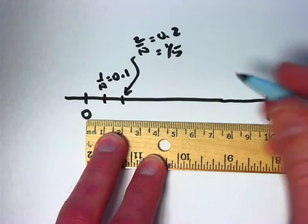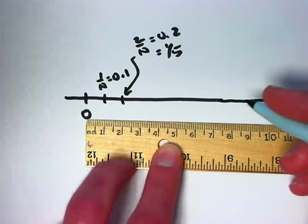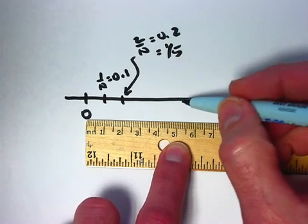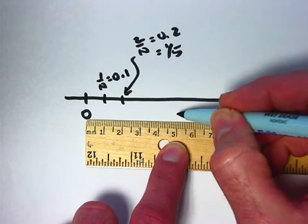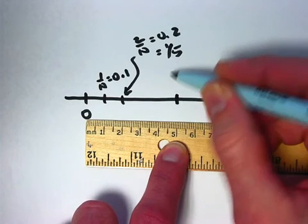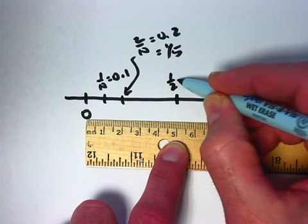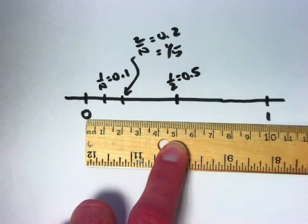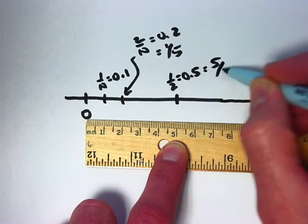What about a half? That's the same as 0.5. It should make sense. It's going to be halfway between 0 and 1. It's going to be where the 5 is there. Right about there. That's a half. 0.5. The same as it's also 5 tenths, if you prefer.